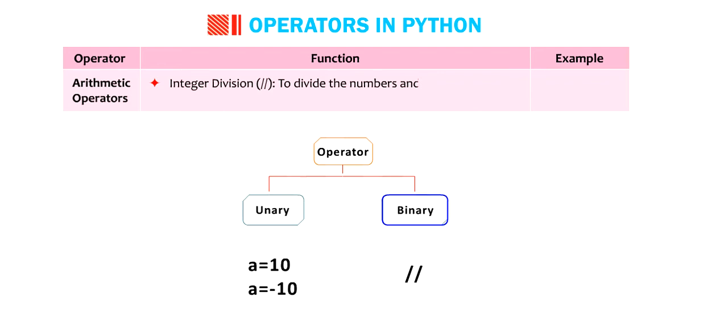Integer division. To divide the numbers and give the result in integer form. 10 division 4 equals to 2.